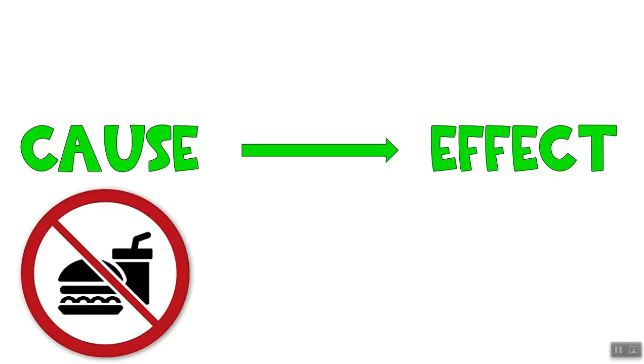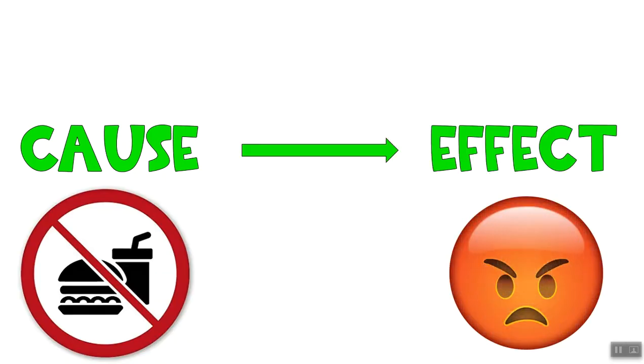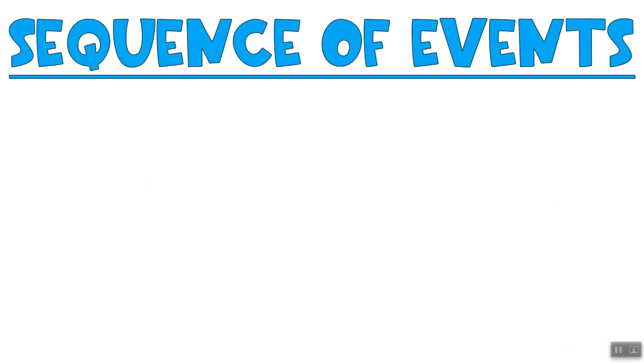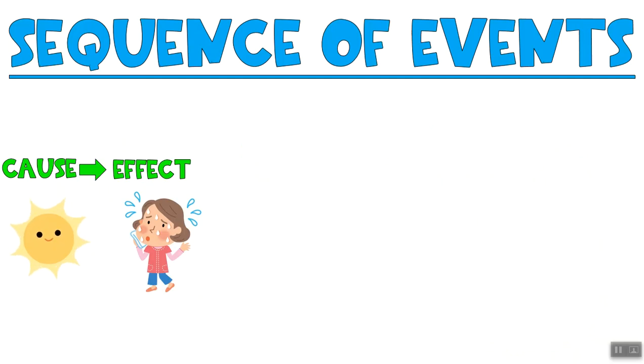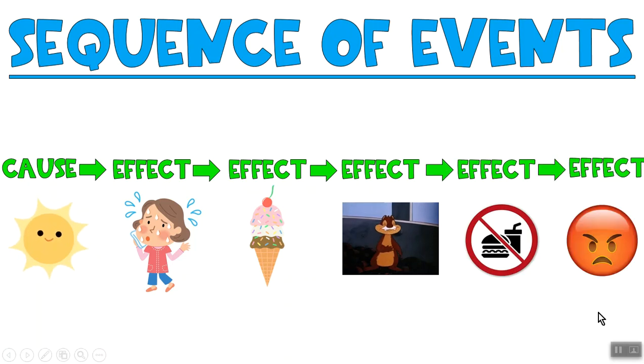Because I was really full I didn't want to eat my dinner. Because I didn't want to eat my dinner my parents were mad at me. You can see it being sunny led to me being warm led to me eating ice cream which led to me being full which led my parents to being mad at me for not eating dinner. And that's what we call a sequence of events. It's when a cause and effect becomes kind of like a chain of events and they kind of have to go in order to be a sequence of events.